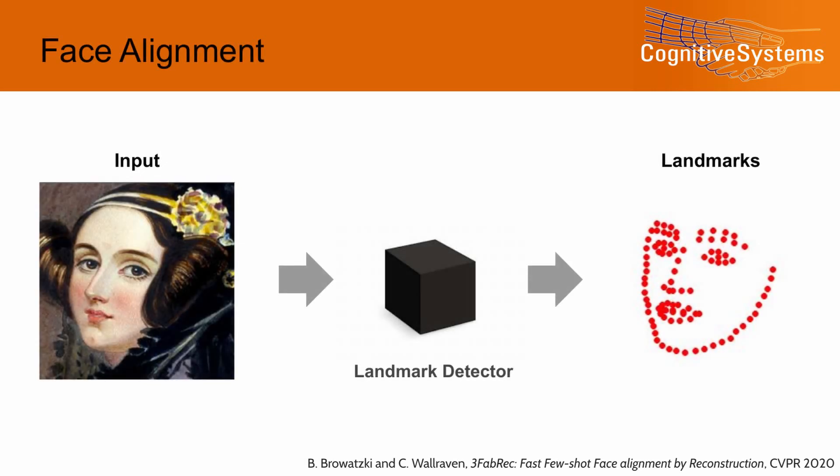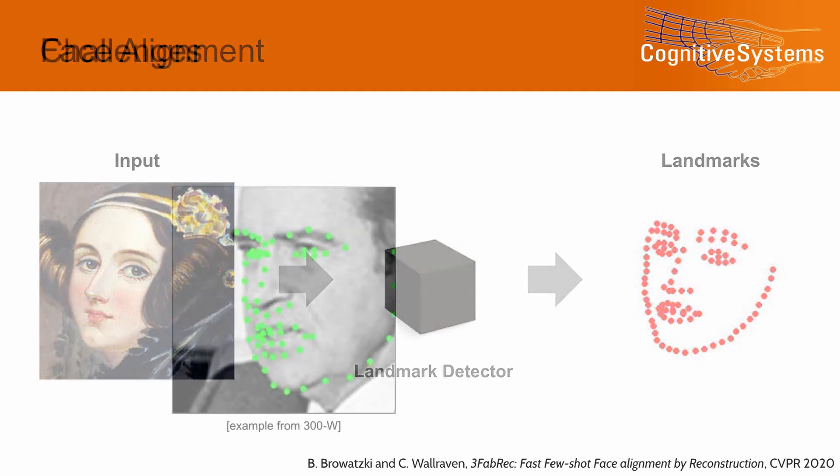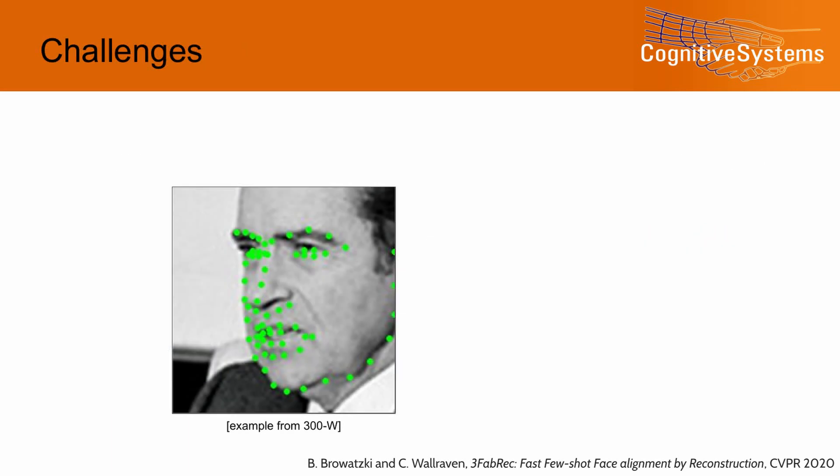Face alignment is one of the fundamental problems in computer vision. From an input image, we predict a set of keypoint locations that correspond with facial structures. Current approaches employ large and powerful networks that learn a direct mapping from input images to landmark locations by training on a set of images that were annotated by human labelers.